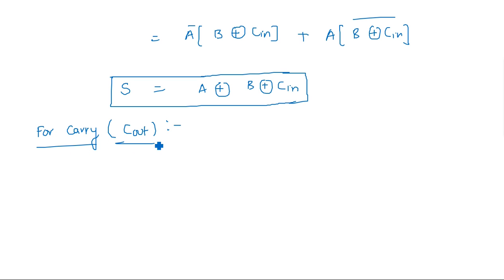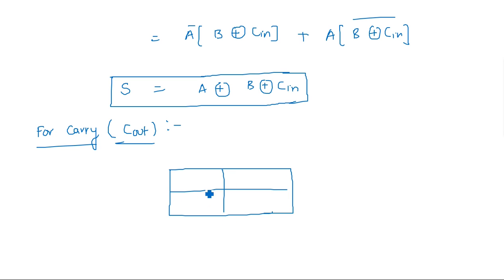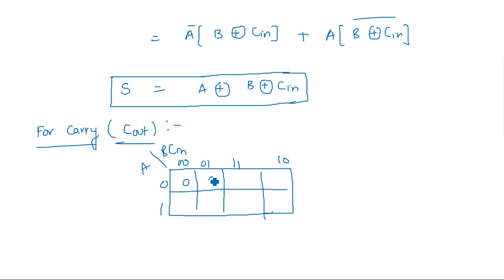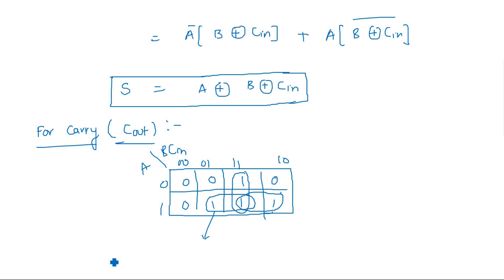For Carry Out, we take the three-variable K-map with A, B, Cin. The K-map headers are: 00, 01, 11, 10 and rows 0 and 1. Filling in Cout values: we have 1s at positions 0,0,1 / 0,1,1 / 1,0,1 / 1,1,1. We can map two adjacent 1s together. Doing so, we get three groupings of two, giving three min terms.